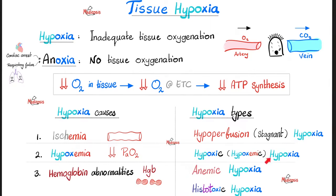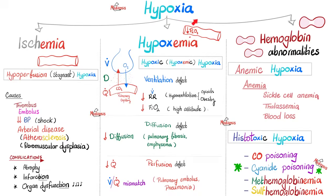You'll find that today's topic is exactly the same as the previous topic. Hypoperfusion or stagnant hypoxia is the same as saying ischemia. Hypoxic or hypoxemic hypoxia is the same as saying hypoxemia. Anemic hypoxia and histotoxic hypoxia together are hemoglobin abnormalities. So if you've watched the previous videos in this pathology playlist, this will make perfect sense to you.